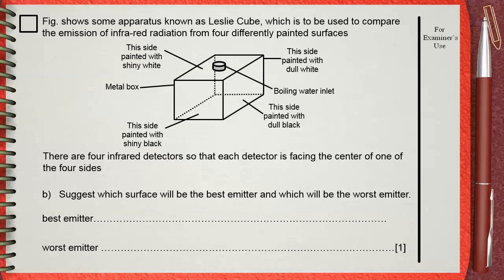Question B. After you did that, suggest which surface will be the best emitter and which will be the worst emitter.